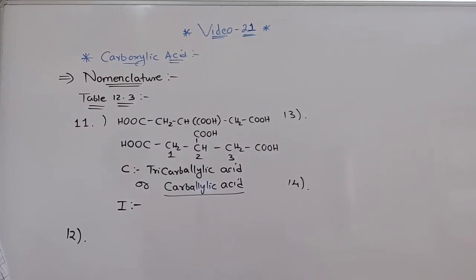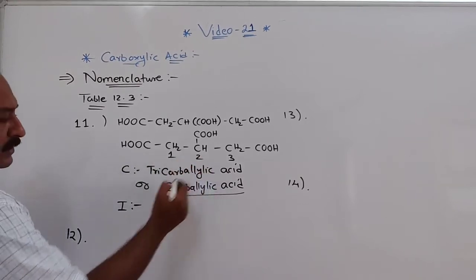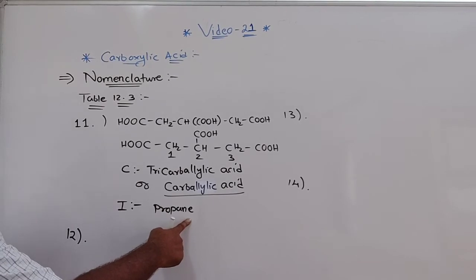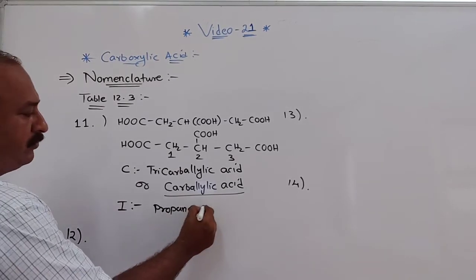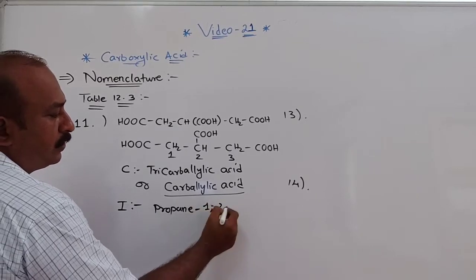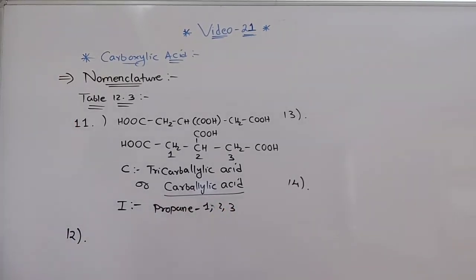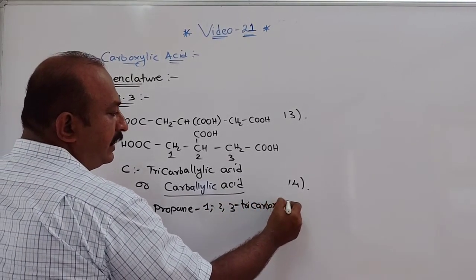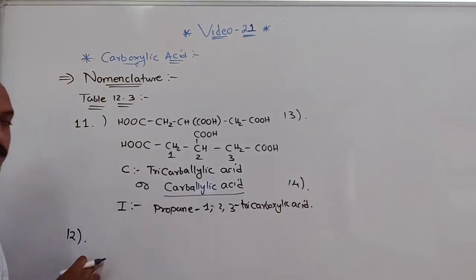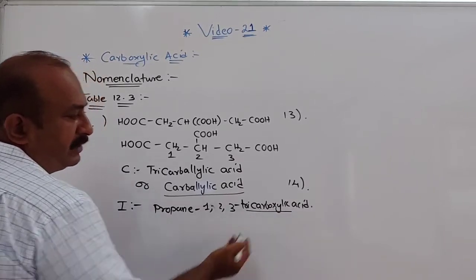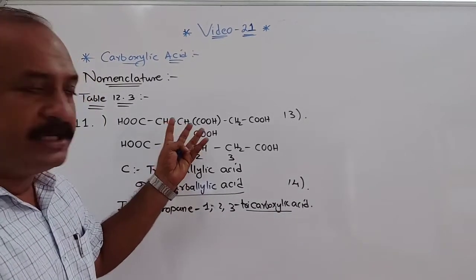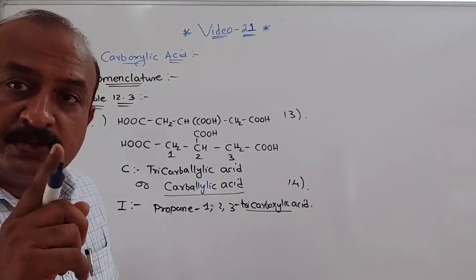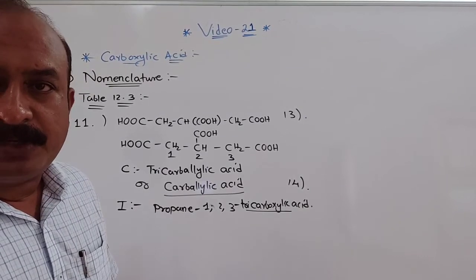Now when we talk about the IUPAC name, 1, 2, 3 carbons means propane. Propane — the E is being considered, it is not being eliminated — so the IUPAC name is propane-1,2,3-tricarboxylic acid. So remember: instead of OIC acid, whenever more than two, that is 3, COOH groups are there, tricarboxylic acid is the suffix you use in IUPAC.